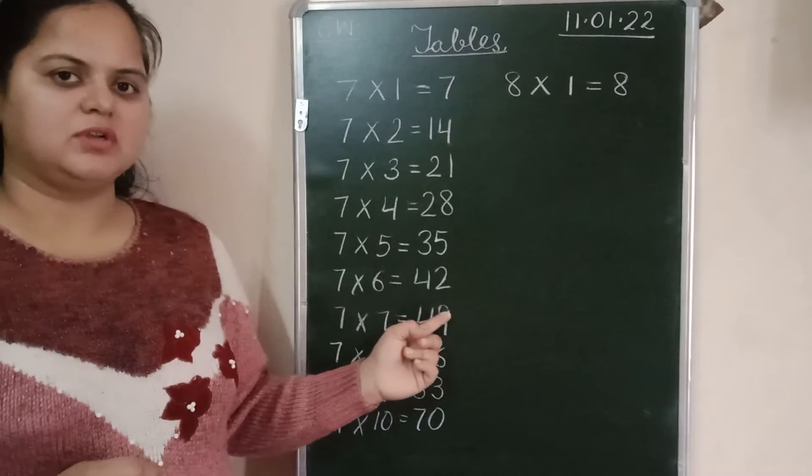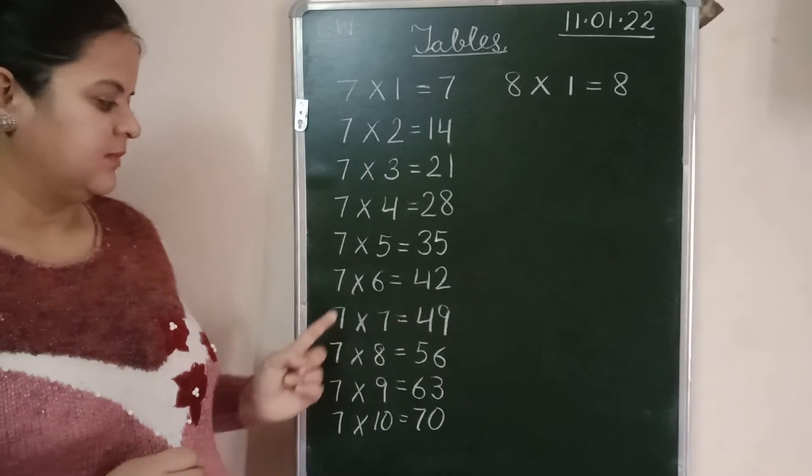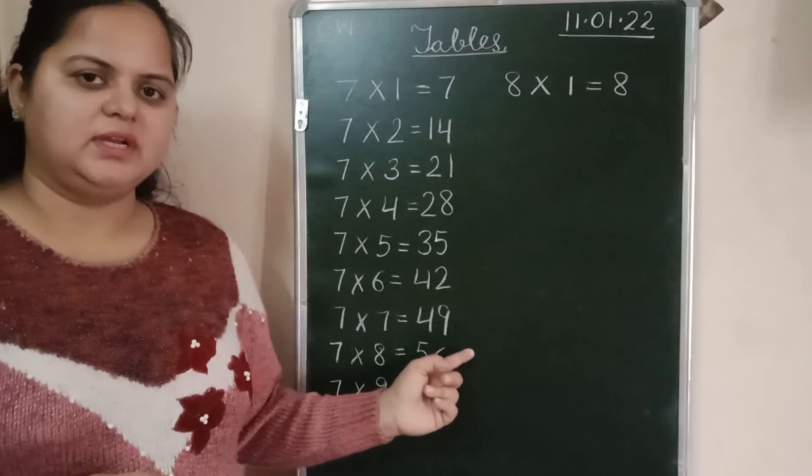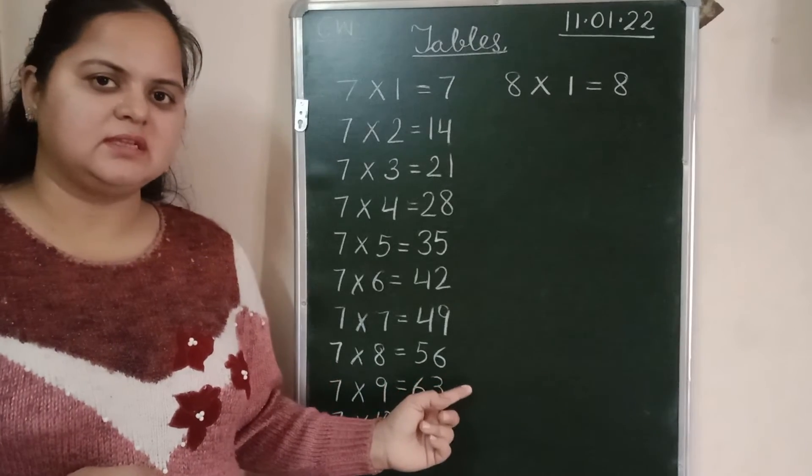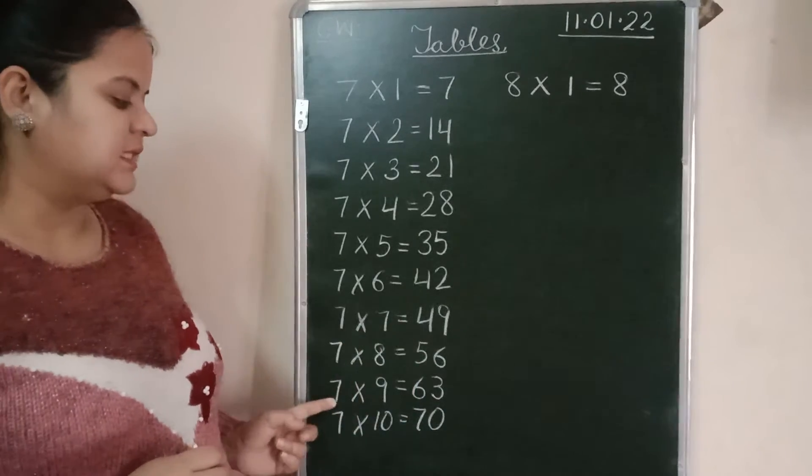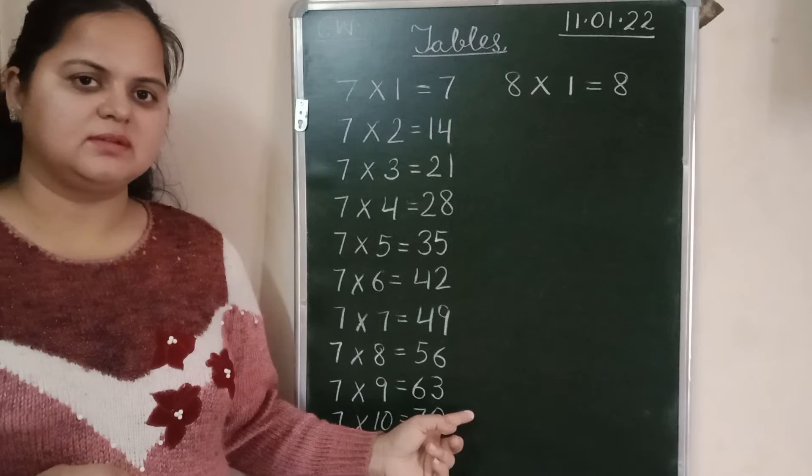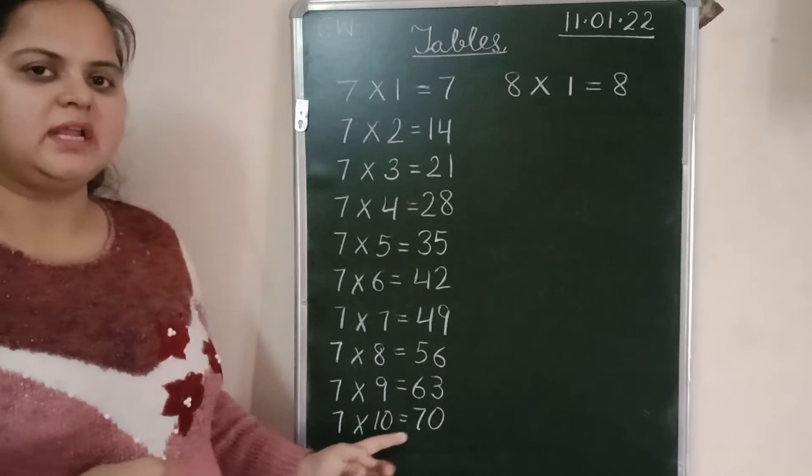7-6s are 42. 7-7s are 49. 7-8s are 56. 7-9s are 63. 7-10s are 70.